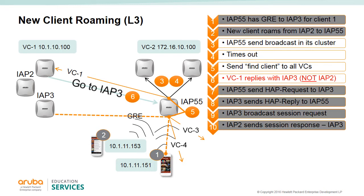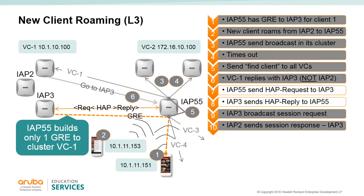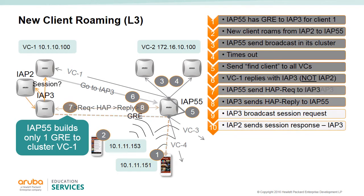The foreign AP55 already has a GRE tunnel to an AP in VC1, so the foreign AP will only create one GRE tunnel to any AP in another cluster. The GRE tunnel already exists but we still need to advise AP3 of this new device. AP55 sends a HAP request to AP3, and AP3 sends a HAP reply to AP55. Since AP3 is not the original owner of client 2, it broadcasts a session request within its cluster. AP2 replies with a session response, and AP3 becomes the new home AP for client 2.